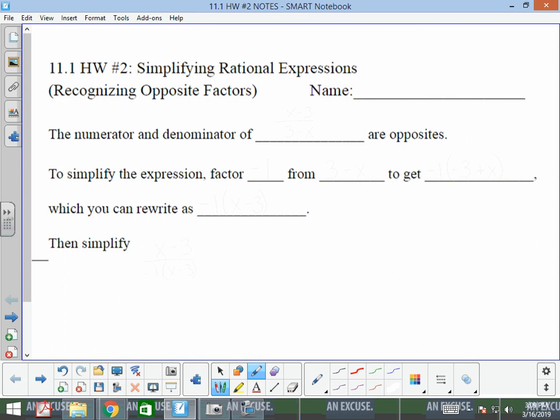The numerator and denominator of this expression, x minus 3 over 3 minus x, are opposites.